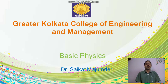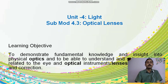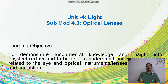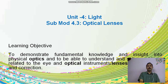Hi, this is Dr. Srikot Majundar. Under the basics of physics for diploma students, today we will discuss optical lenses. It is under submodule 4.3 and it falls under unit 4, and the name of unit 4 is Light. The learning objective is to demonstrate fundamental knowledge and insight into physical optics, and to understand and solve problems related to the eye, optical instruments, lenses, their function and correction.